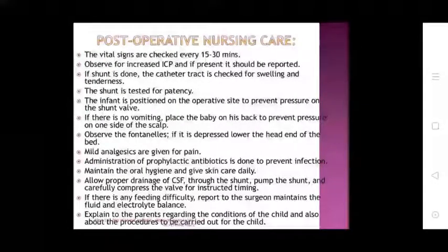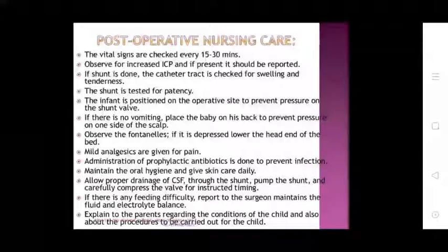Post-operative nursing care: check vital signs every 15 to 30 minutes; observe for increased ICP and report. Check the shunt catheter tract for swelling and tenderness; test the shunt for patency. Position the infant on the opposite side to prevent pressure on the shunt valve. If no vomiting, place baby on the back. Observe the fontanel; if depressed, lower the head of the bed. Give mild analgesics for pain; administer prophylactic antibiotics to prevent infection. Maintain oral hygiene and give daily skin care. Allow proper drainage of CSF through the shunt by carefully compressing the valve at instructed intervals. Maintain fluid balance and explain all procedures to parents.